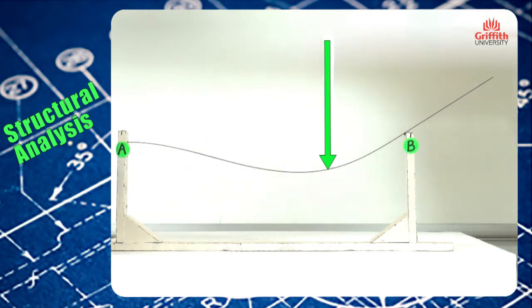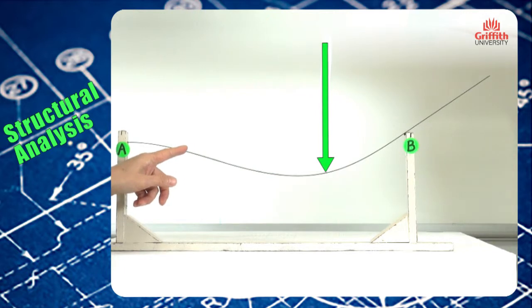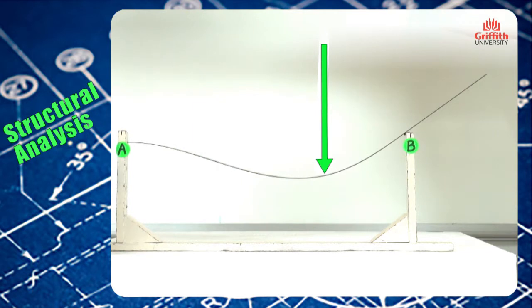The curvature close to point A is kind of concave up and then gradually develops into concave down. So there is a contraflexor point where the curvature changes sign.